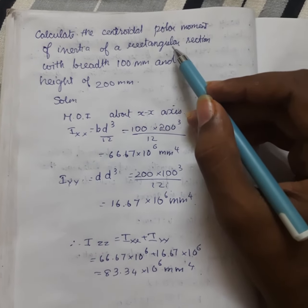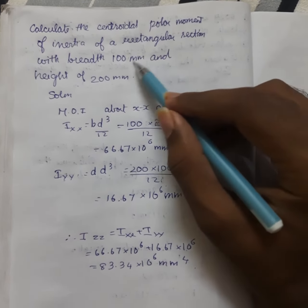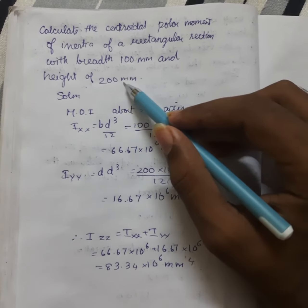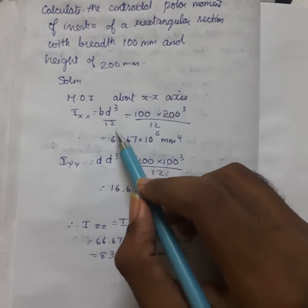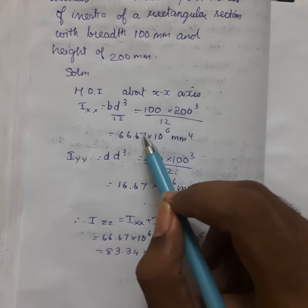I_z equals I_xx plus I_yy, therefore we need to find the moment of inertia with the values of width and height. I_xx equals bd³ divided by 12, which equals 100 times 200³ divided by 12, which equals 66.67 times 10⁶ mm⁴.